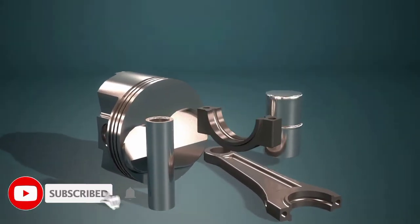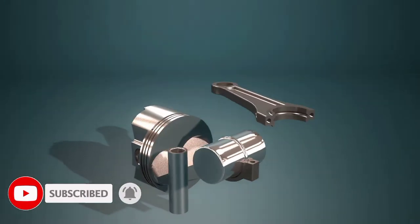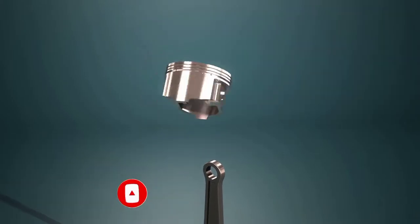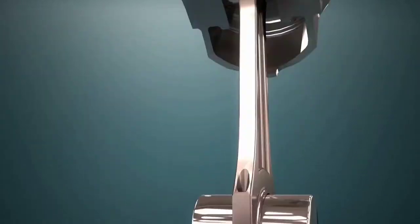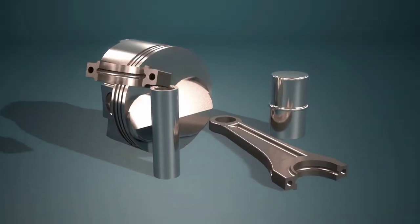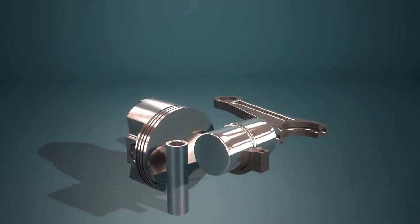The piston's function is to act as a movable plug in the cylinder, forming the bottom part of the combustion chamber. There's a gas-tight seal between the piston and the cylinder wall, so the only way for the hot combustion gases to expand is by forcing the piston down.